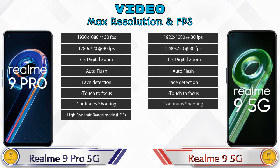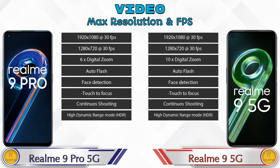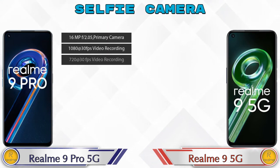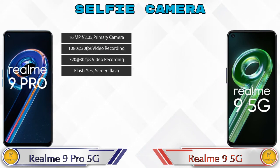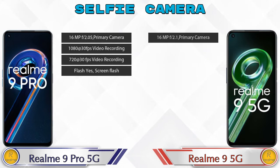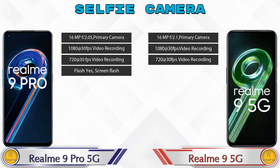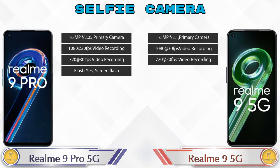For the front selfie camera, the Realme 9 Pro 5G has a single camera with four different features available. The Realme 9 5G also has a single front camera, but with three features available.